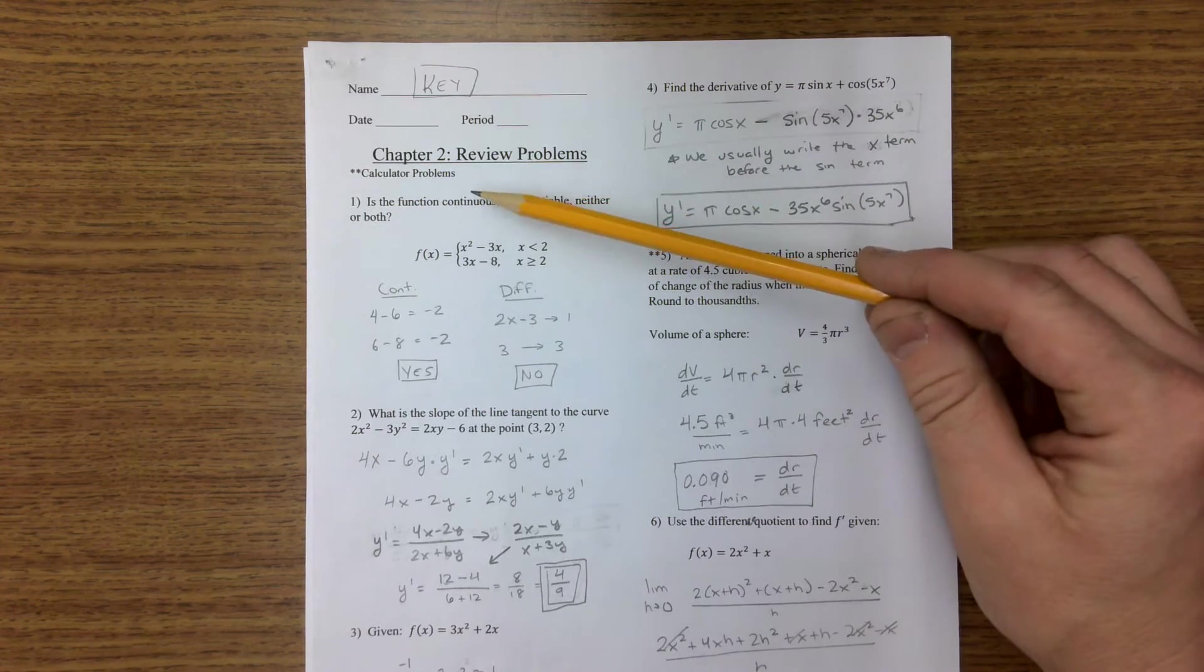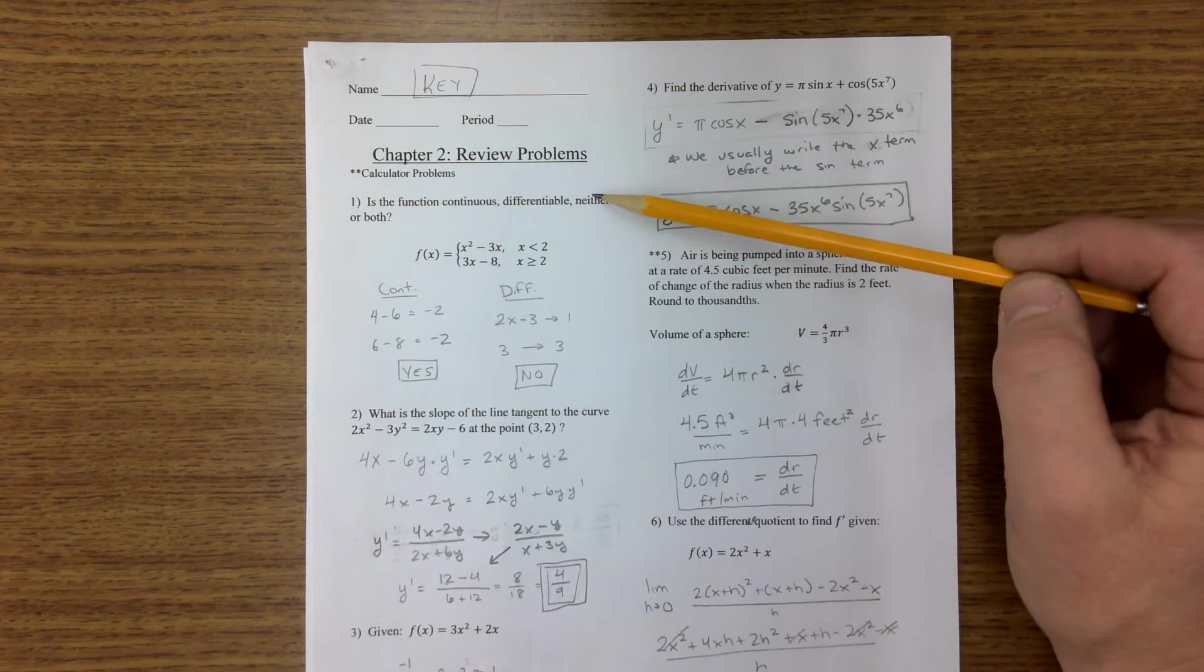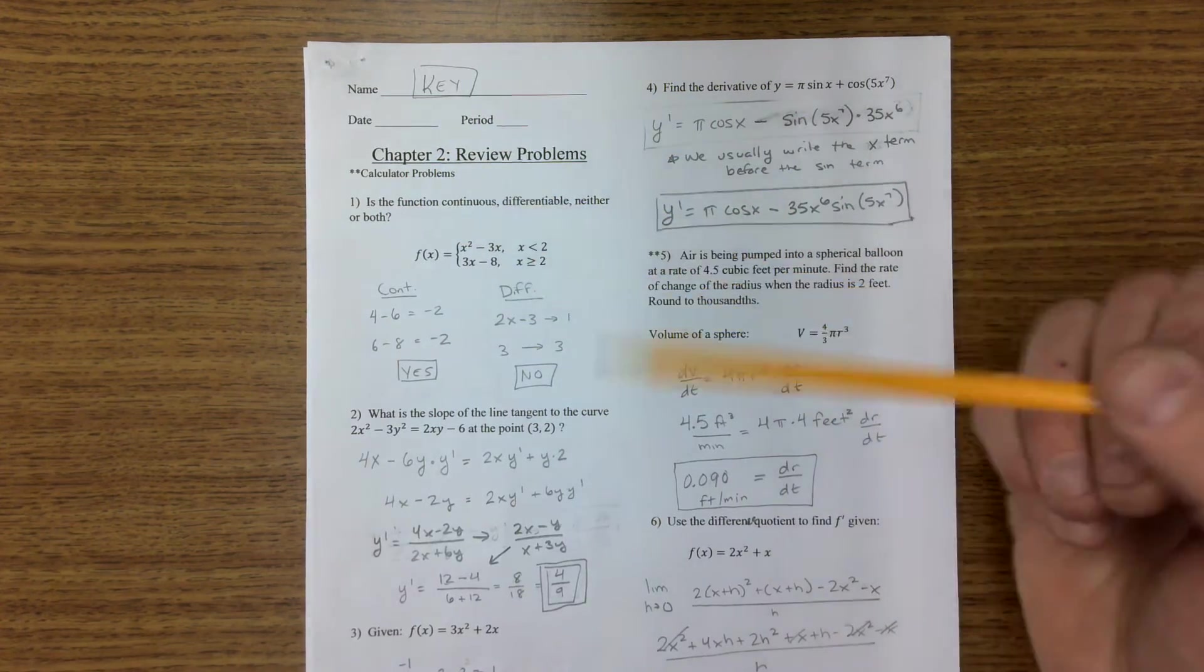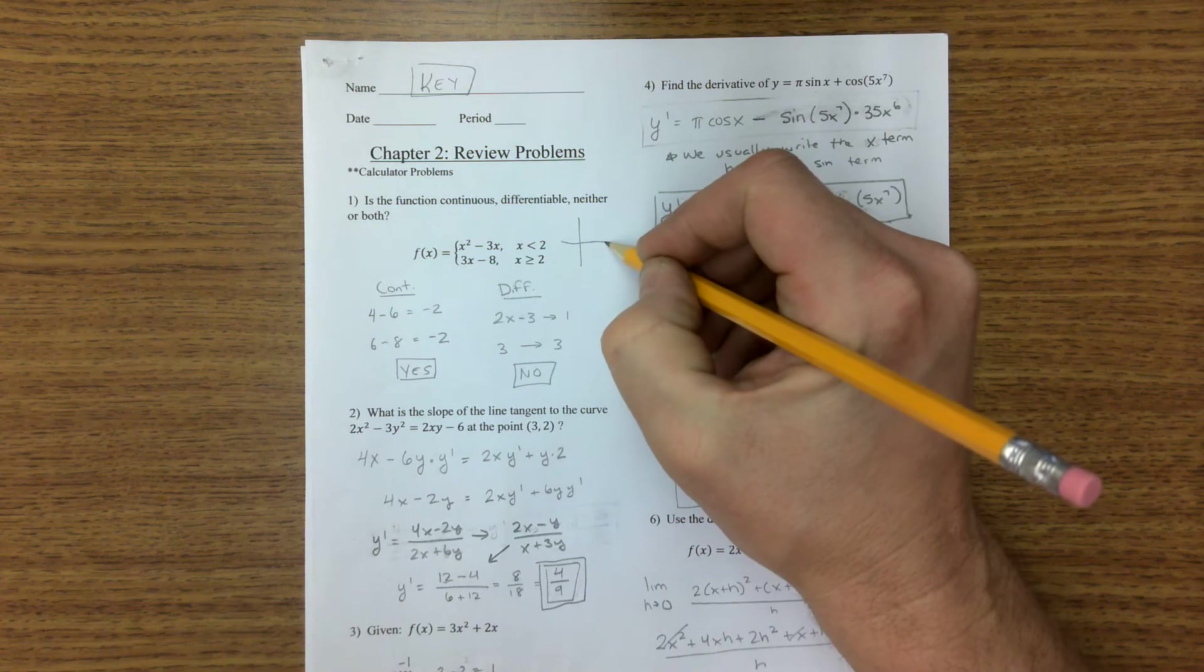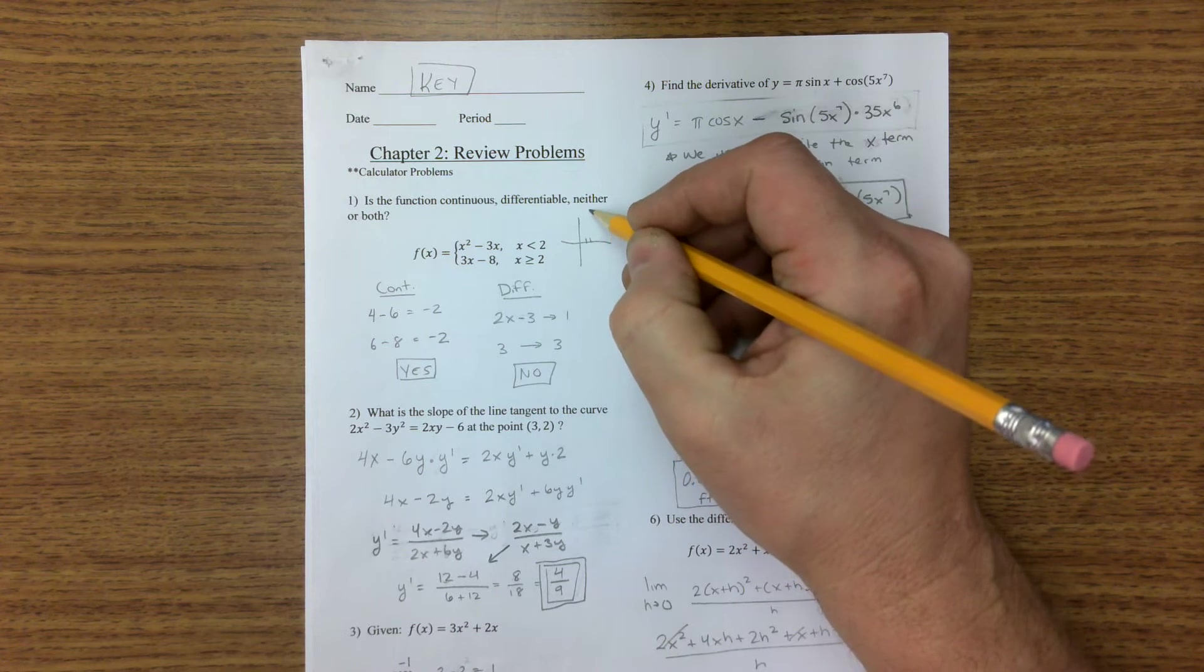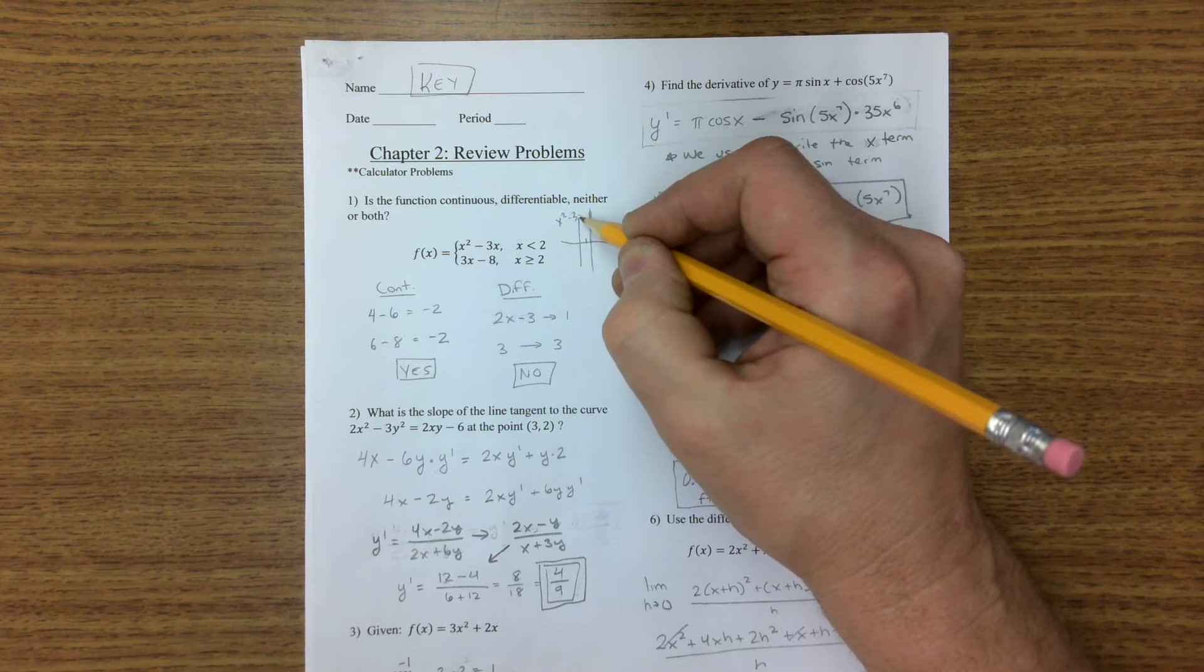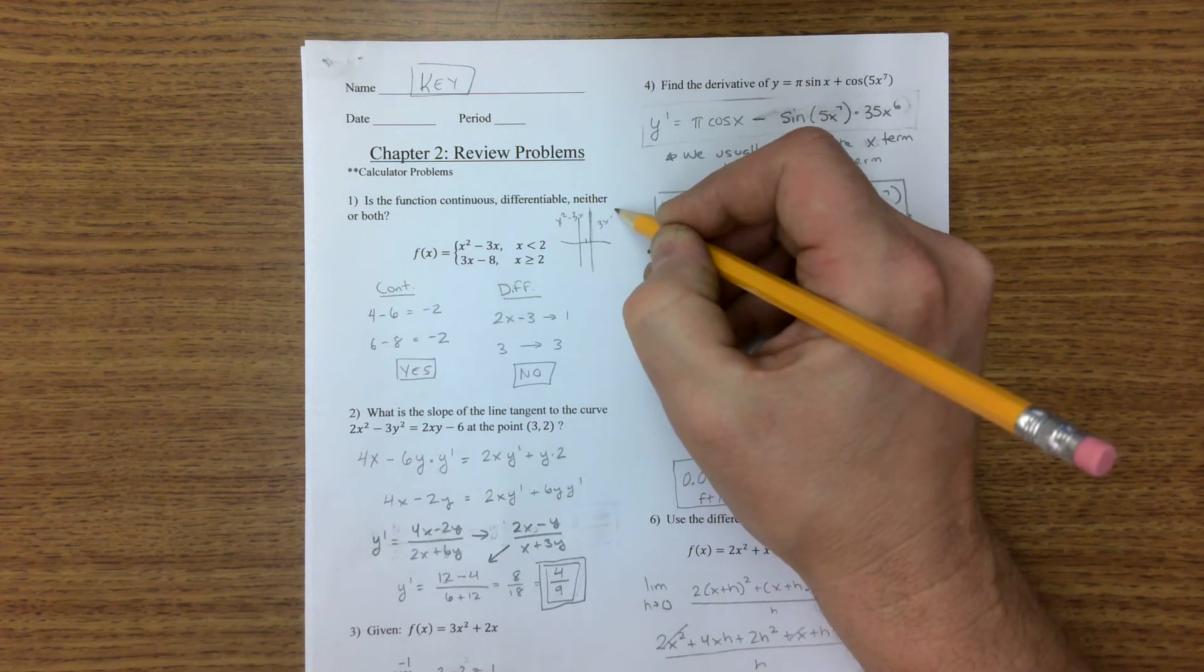Alright, first off, continuous or differentiable, neither or both. Well, you have a left side and a right side. If I were to graph this right here, at the point 2, there's this change in the function. On the left side I have this function, and on the right side I have this function.